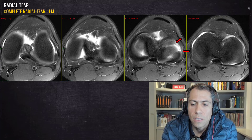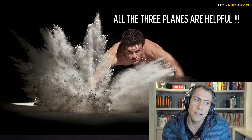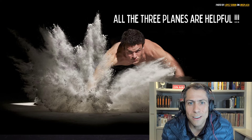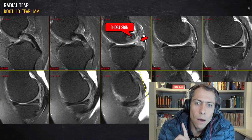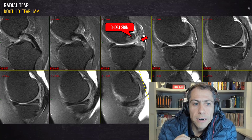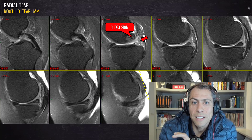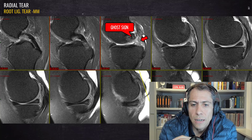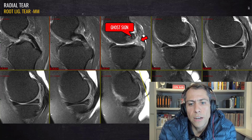The axial plane is very useful for analyzing radial tears. For radial tears, all three planes are helpful, so use everything you have to analyze and report this type of tear. Now let's look at one last case in this video — a radial tear in a specific location: the posterior root ligament of the medial meniscus. This is a classic degenerative root ligament tear, which I'll cover in more detail in a dedicated video.